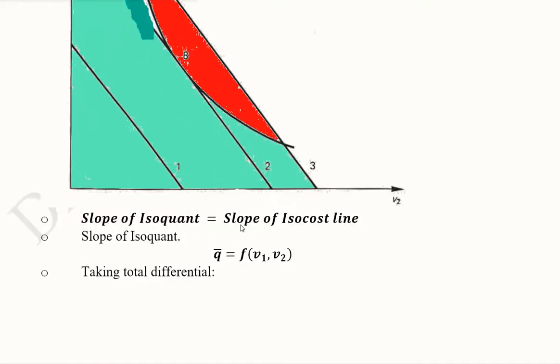We try to find out this slope and for that we take the function. The function of the isoquant is this, where the output is fixed at this level. You can see above Q we have a bar that shows this is an isoquant, that the quantity produced remains the same. V1 and V2 are the inputs.